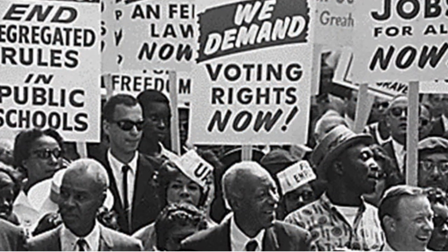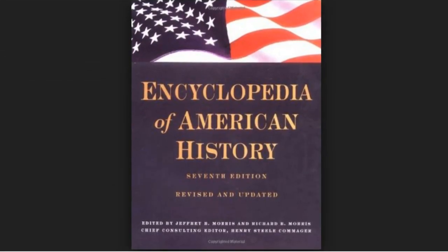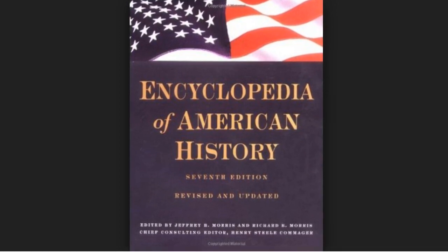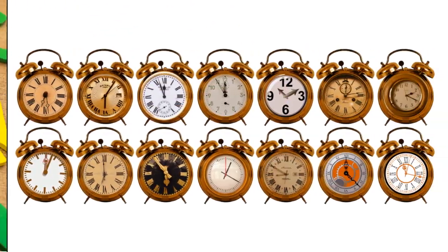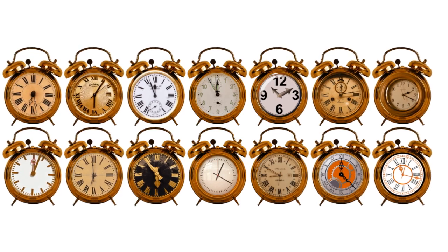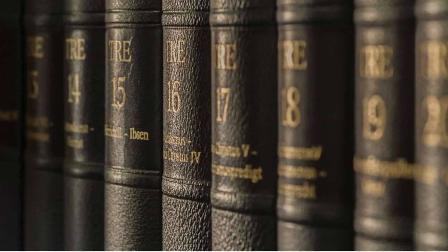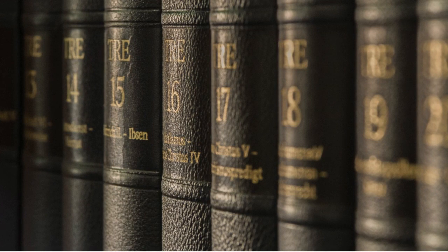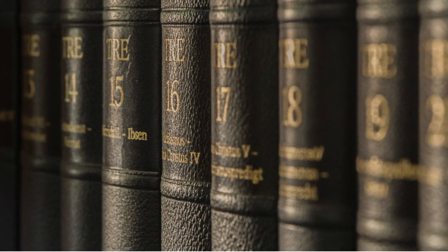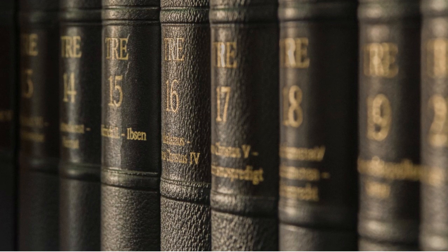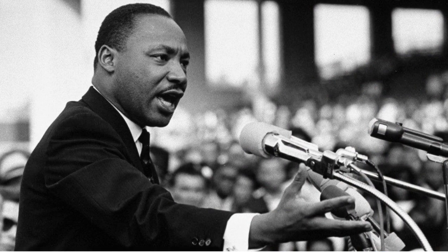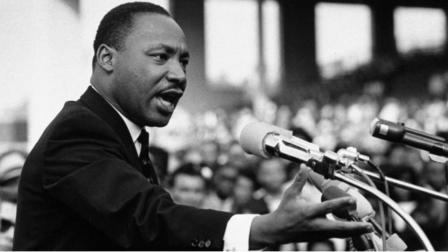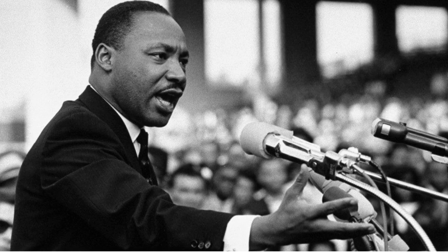For example, suppose you're writing a paper about the civil rights movement in the United States and you're looking for background information in an encyclopedia of American history. Knowing whether the book is arranged alphabetically, chronologically, or some other way — such as with an alphabetical list of people in one volume and a chronological list of historic events in another — will make it easier to find information about something like Martin Luther King Jr.'s I Have a Dream speech, which he gave during the March on Washington for Jobs and Freedom on August 28, 1963.